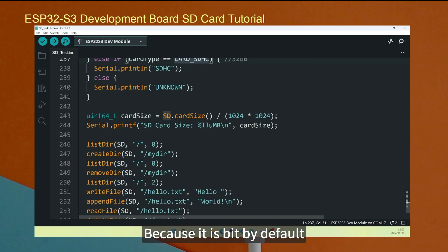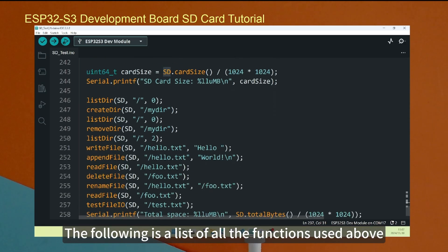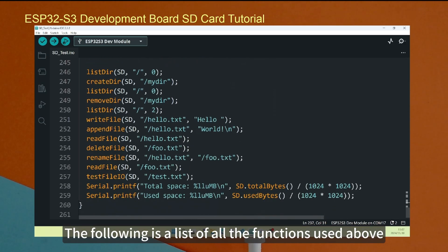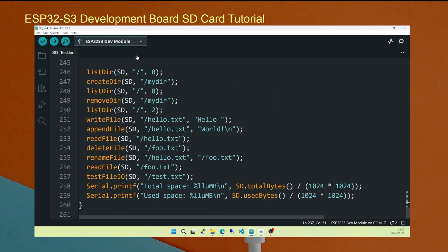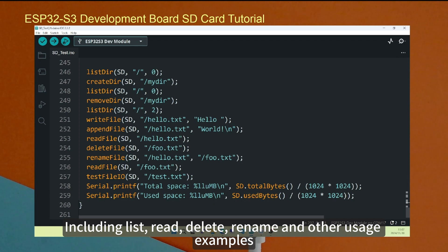This function converts it into a form of MB. Because it is in bits by default. The following is a list of all the functions used above, including list, read, delete, rename and other usage examples.